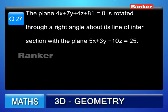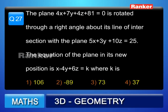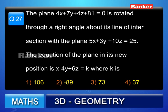Let us move to question number 27. The plane 4x + 7y + 4z + 81 = 0 is rotated through a right angle about its line of intersection with the plane 5x + 3y + 10z = 25. The equation of the plane in its new position is x - 4y + 6z = k, where k equals: option 1: 106, option 2: -89, option 3: 73, option 4: 37.